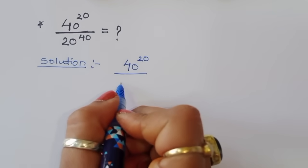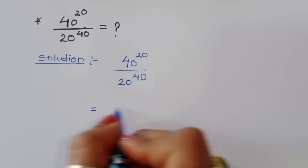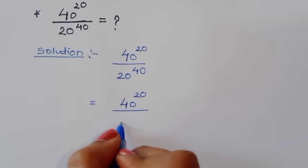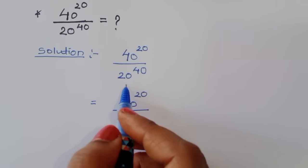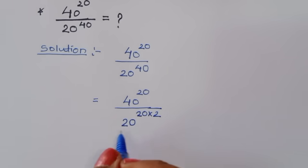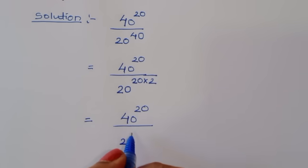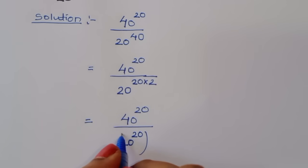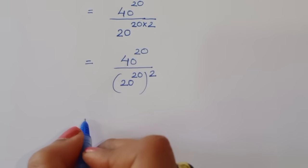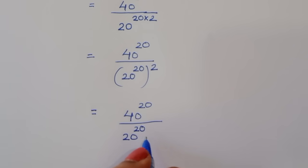So we have 40 power 20 divided by 20 power 40. We can convert the denominator in terms of 20: since 20 times 2 equals 40, we can write 20 power 40 as 20 power (20 times 2). This gives us 40 power 20 divided by 20 power 20, quantity squared.